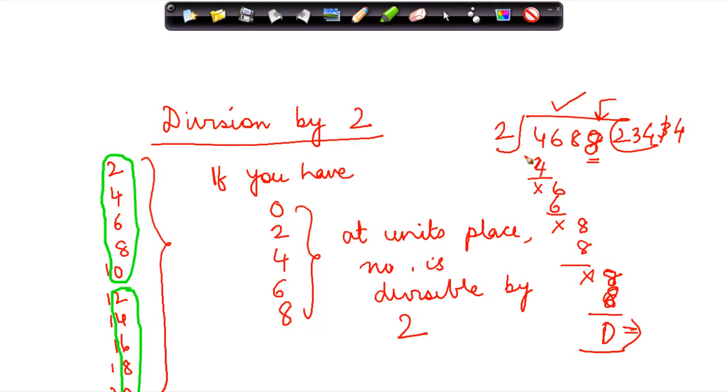Hence if it was 8 or for that matter any of these numbers, they should have been divisible by 2. So the rule for 2 is: if a number has either 0, 2, 4, 6, or 8 at its ones place, then the number is divisible by 2.